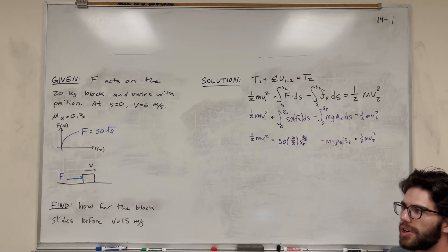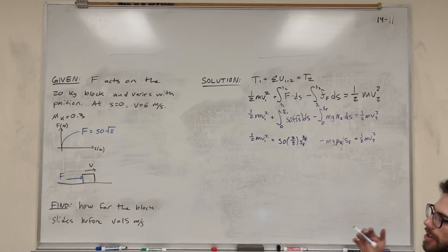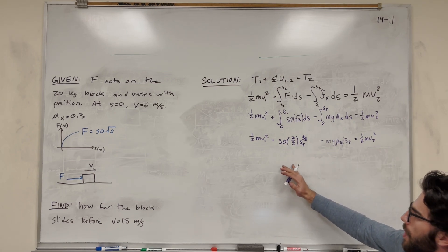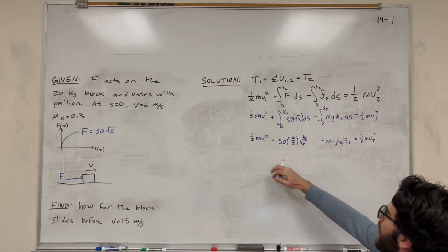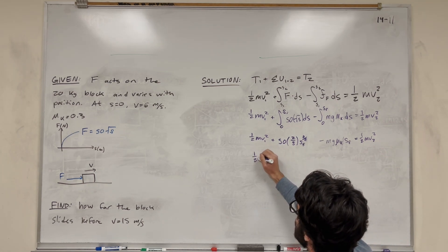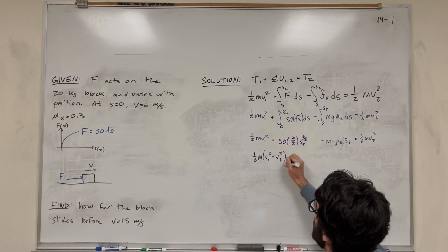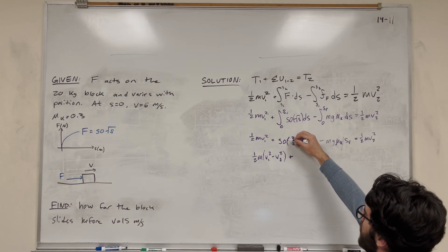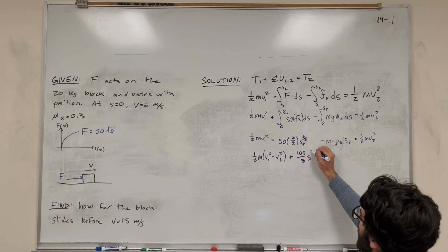Now we can see we're lining up for a weird equation. We have s to the three-halves and s, and then a variable that's just known. We're going to need to do some weird solving techniques for this, but let's first move everything to one side. I'm going to first move this one-half mass velocity squared to the other side, and we're going to end up with one-half mass velocity 1 squared minus velocity 2 squared. Then this is going to be plus, so 50 times 2 is 100 over 3.